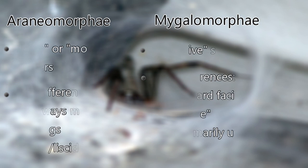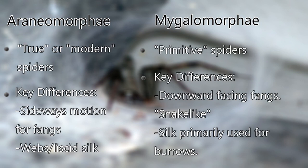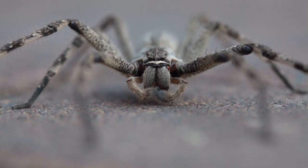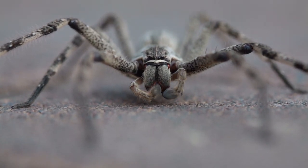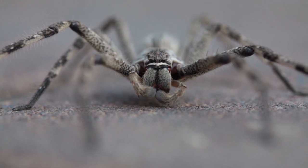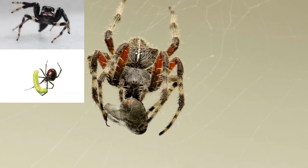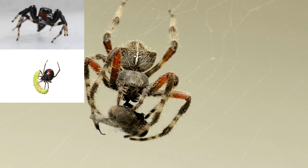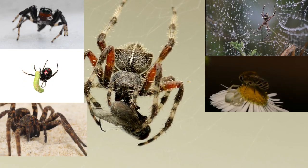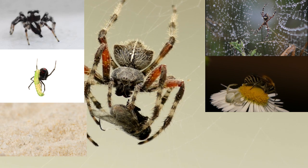Our funnel web spiders are araneomorphs, meaning they are true or modern spiders. Australian funnel web spiders are mygalomorphs, meaning primitive spiders. There are some key differences between the two kinds of spiders, but two easily recognizable ones: true or modern spiders have fangs that move in a scissor-like or sideways motion. Some common examples of true spiders include the grass spider, other funnel weavers, jumping spiders, cobweb spiders, wolf spiders, garden spiders, and crab spiders.